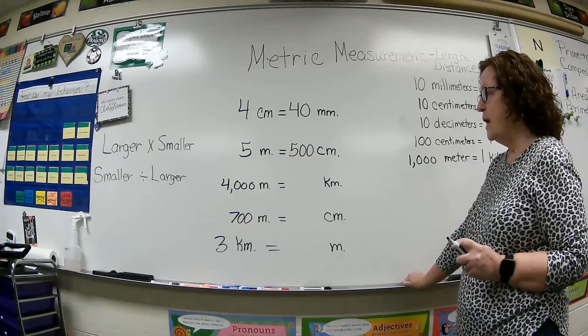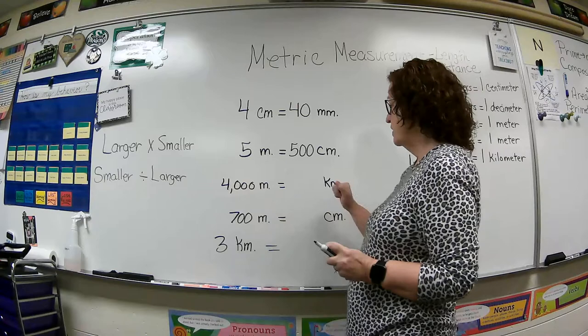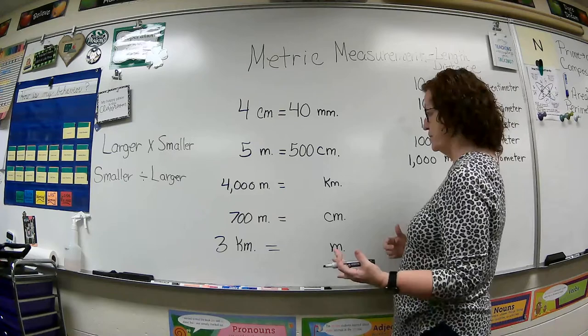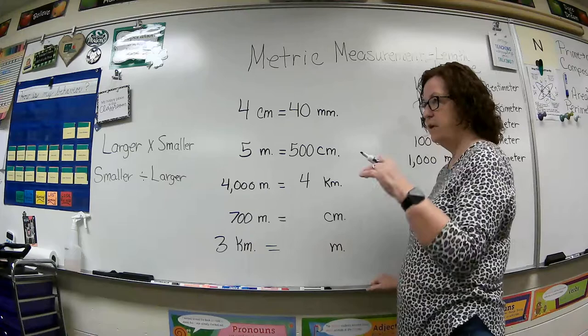This time we are going from a smaller to a larger unit: 4,000 meters — change them to kilometers. We know there are 1,000 meters in 1 kilometer. So 4,000 divided by 1,000 gives you 4. The zeros cancel each other out.